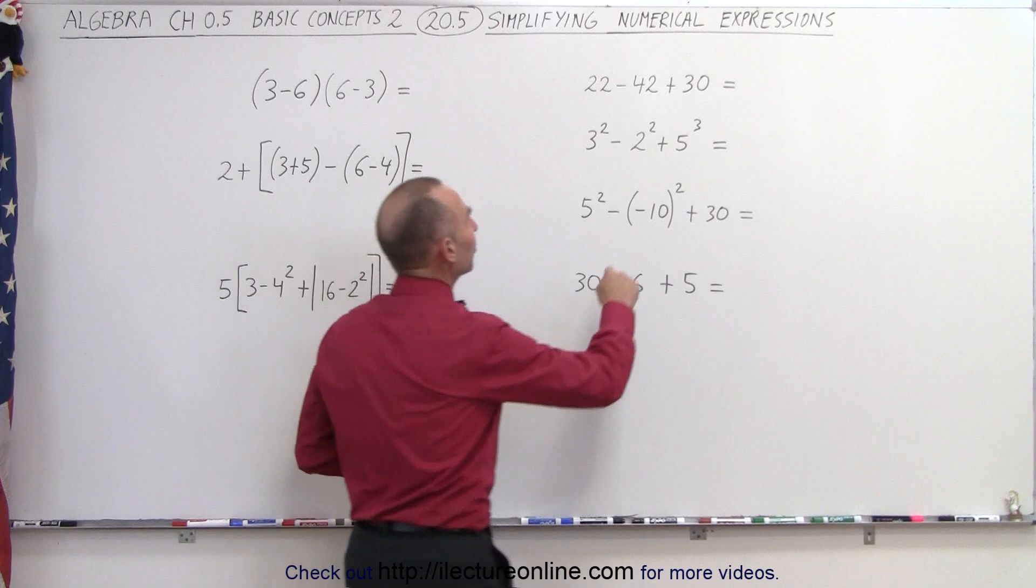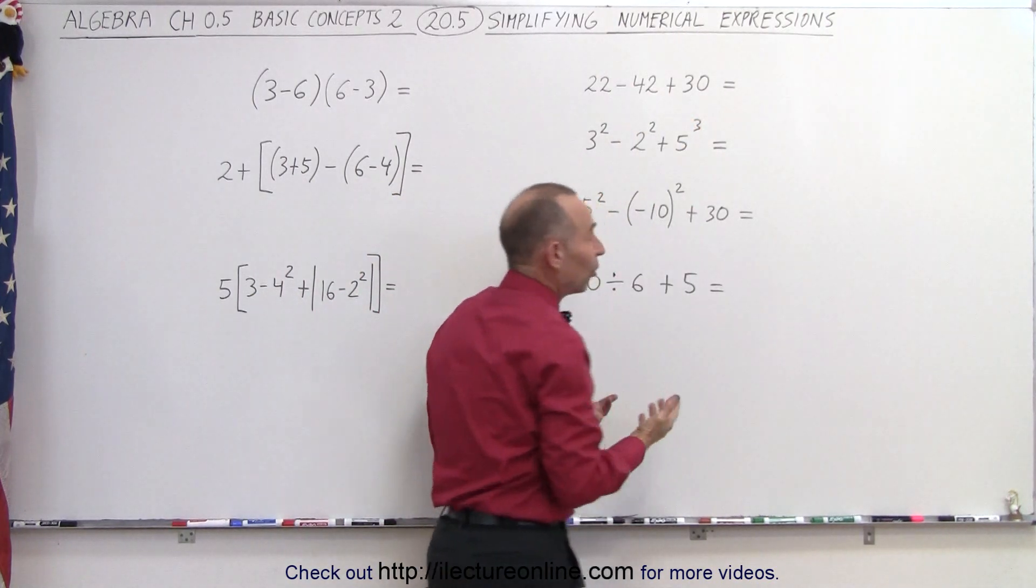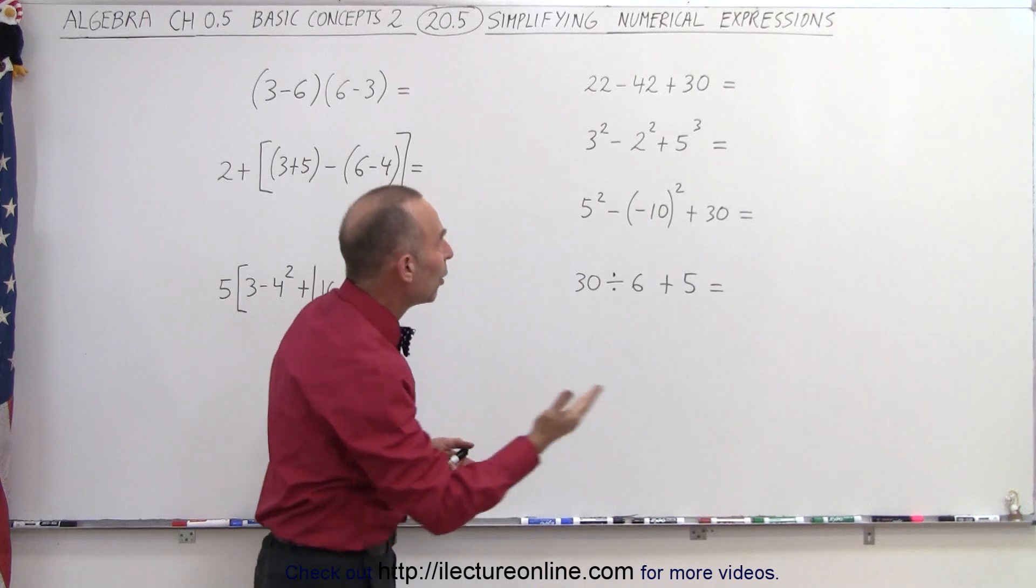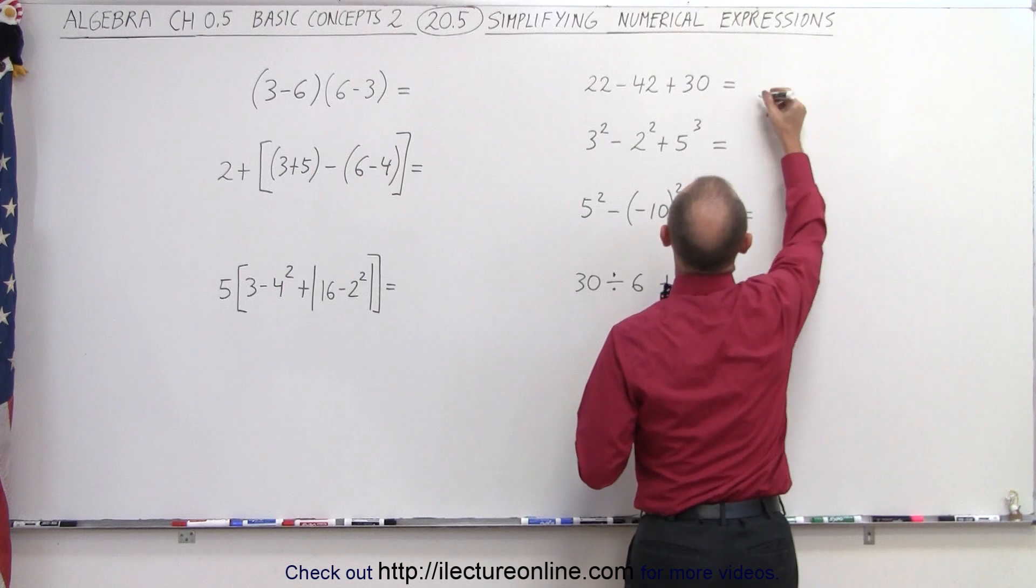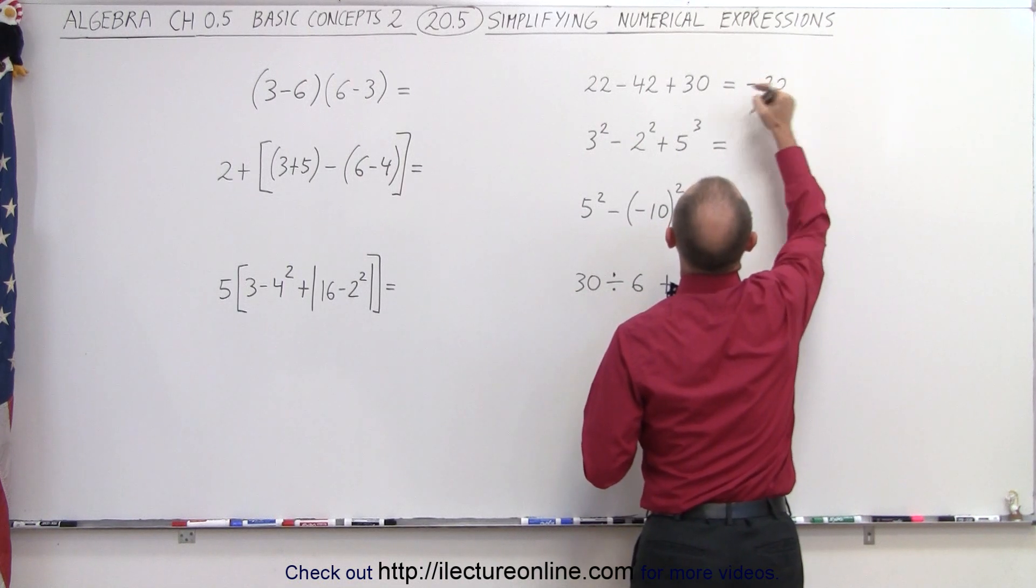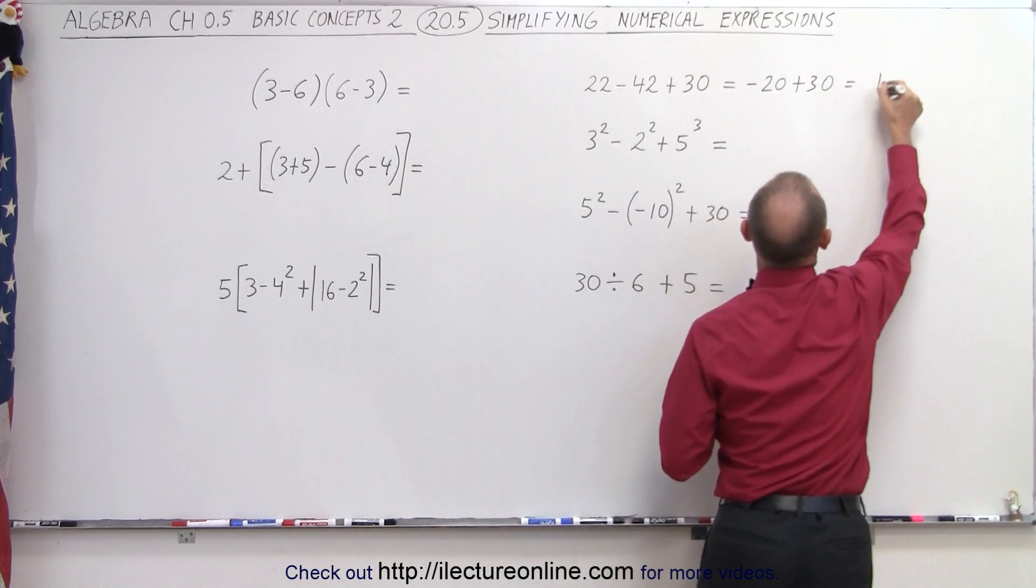So in our first example, there's a tie, there's a subtraction and an addition. And so since they have the same priority, we start on the left. We first go 22 minus 42, and that gives us minus 20. And then here we add plus 30 to that, and then this becomes equal to 10.